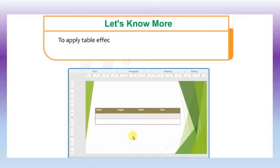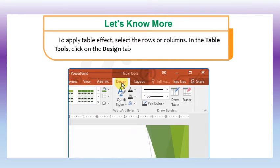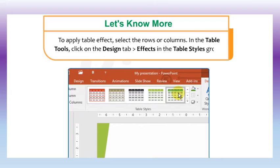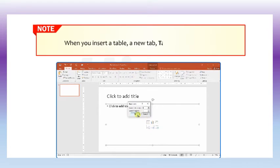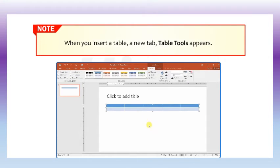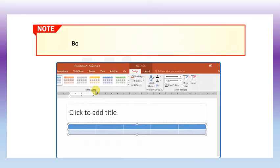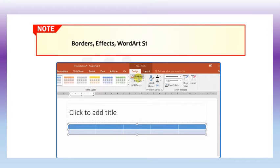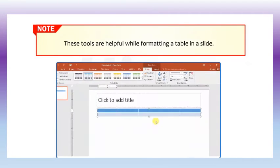To apply table effects, select the rows or columns. In the table tools, click on the design tab then go to effects in the table styles group. When you insert a table, a new tab called table tools appears. You will find various tools and commands in the design and layout tabs such as table styles, shading, borders, effects, word art styles, draw borders, etc. These tools are helpful while formatting a table in a slide.